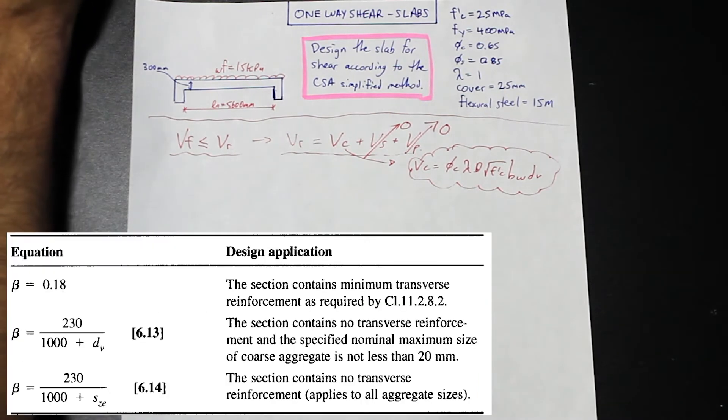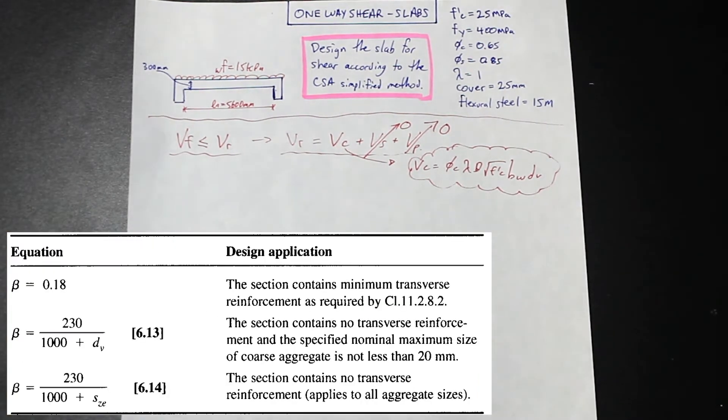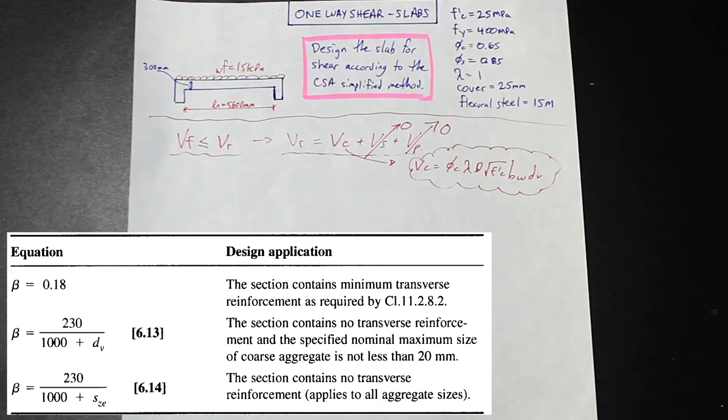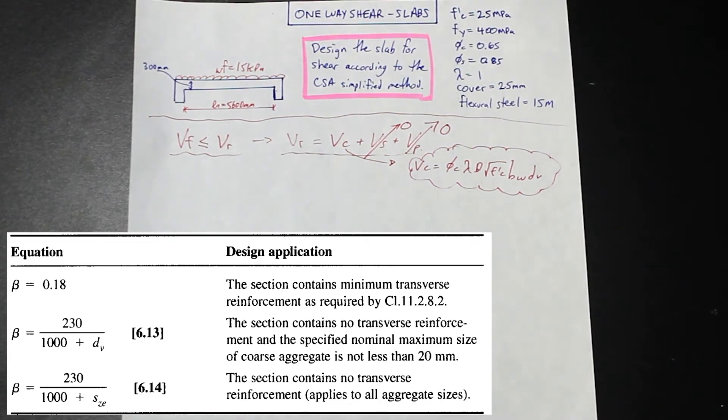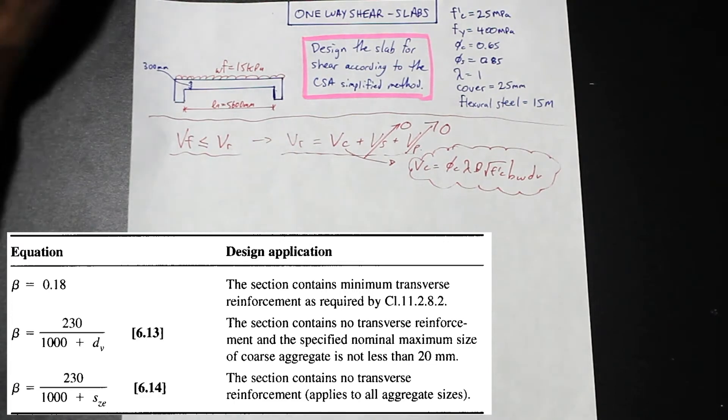Let's go ahead and take a look at the screen. From the CSA A23-3 simplified method, this gives us three options for beta. If the section contains minimum transverse reinforcement, we're going to take beta as 0.18. We don't have any transverse reinforcement in our slab, so we're not going to use 0.18. Beta equals 230 divided by 1,000 plus dv. The section contains no transverse reinforcement with specified nominal maximum aggregate size not less than 20 millimeters. That could be something we're going to use.